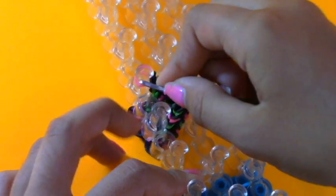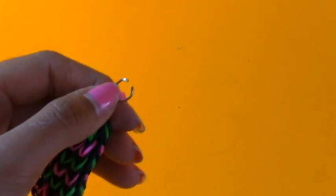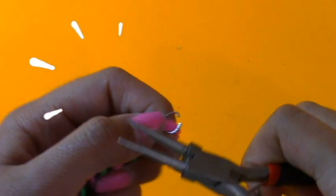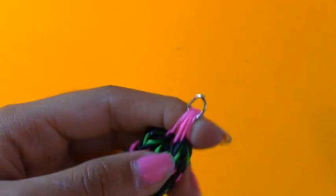After you've done that, take a medium-sized jump ring and put it in on the bands, then close the jump ring up and you can put a keychain on that jump ring.